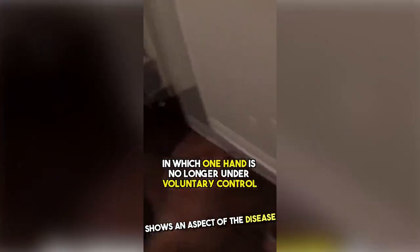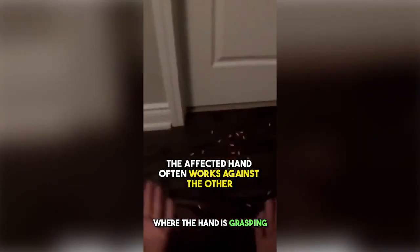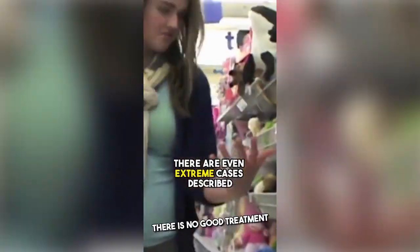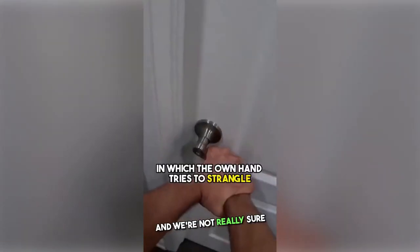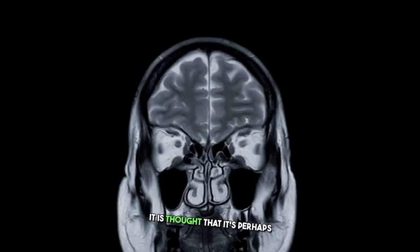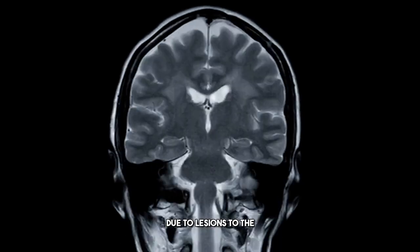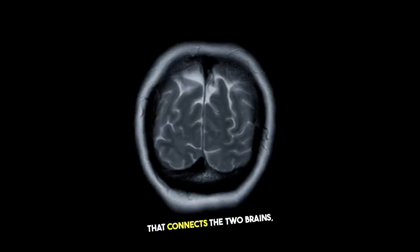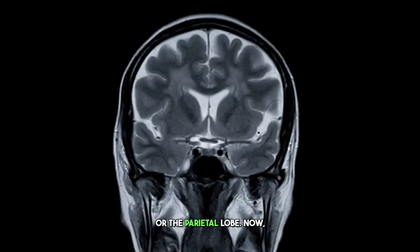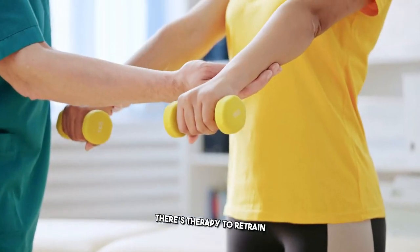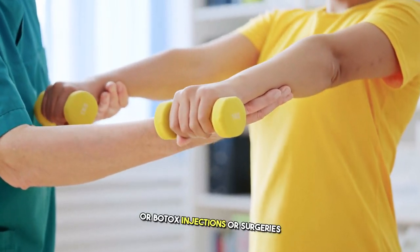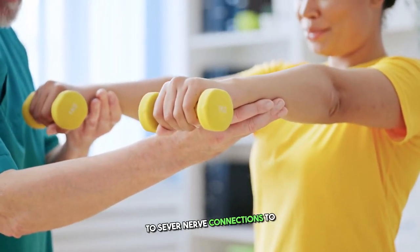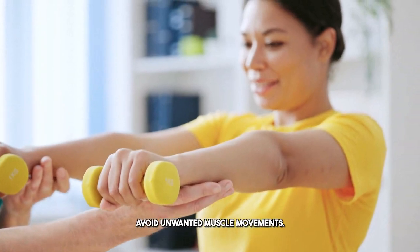This video, although I'm not sure if it's real or not, shows an aspect of the disease where the hand is grasping things or performing unwanted gestures. There's no good treatment for this condition, and we're not really sure exactly what the cause is. It is thought that it's perhaps due to lesions to the corpus callosum, which is a part of the brain that connects the two brains, or the parietal lobe. Now there's therapy to retrain brain-hand coordination that could be helpful, or Botox injections or surgeries to sever nerve connections to avoid unwanted muscle movements.